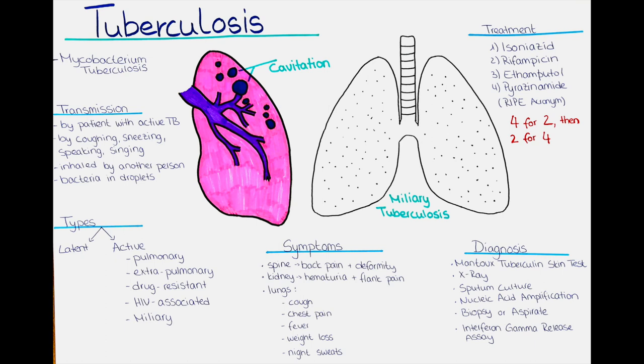However, if the immune system is weakened, such as in people with HIV or malnutrition, or if there is a large exposure to the bacteria, such as in crowded or poorly ventilated settings, the likelihood of infection is increased.